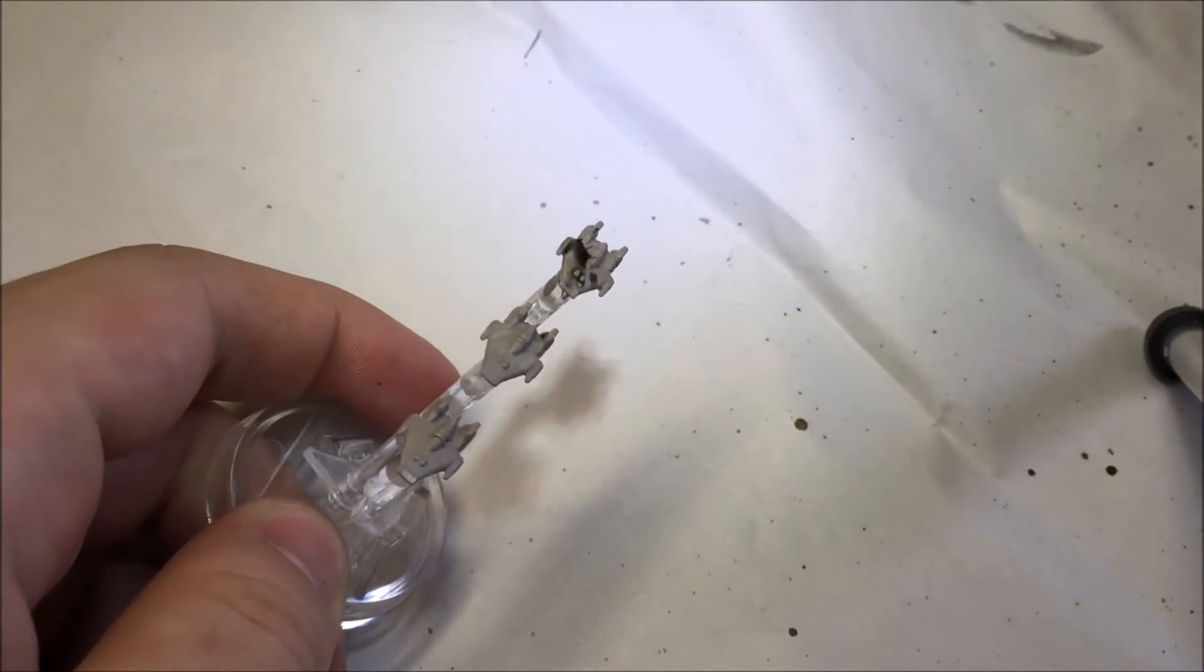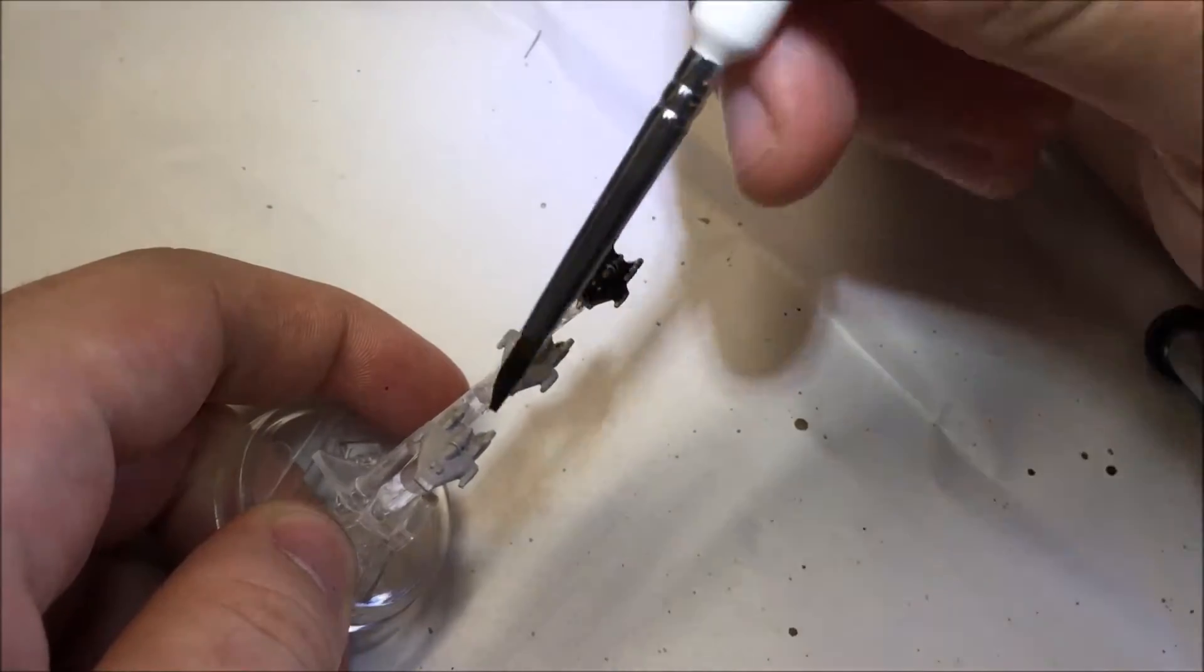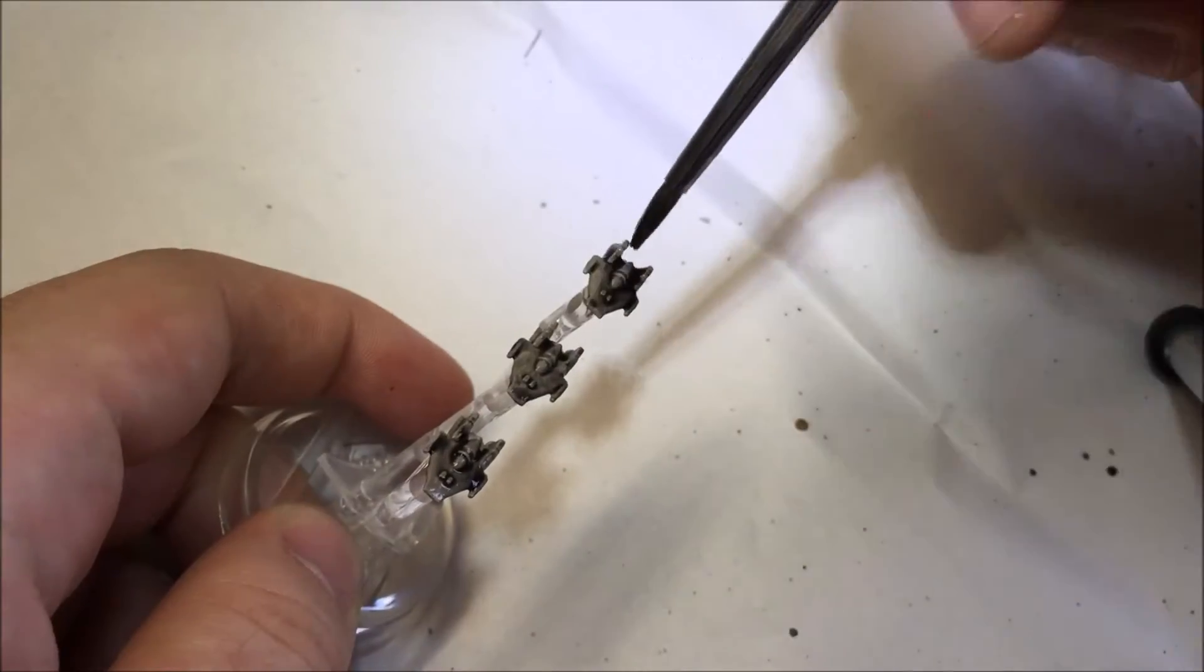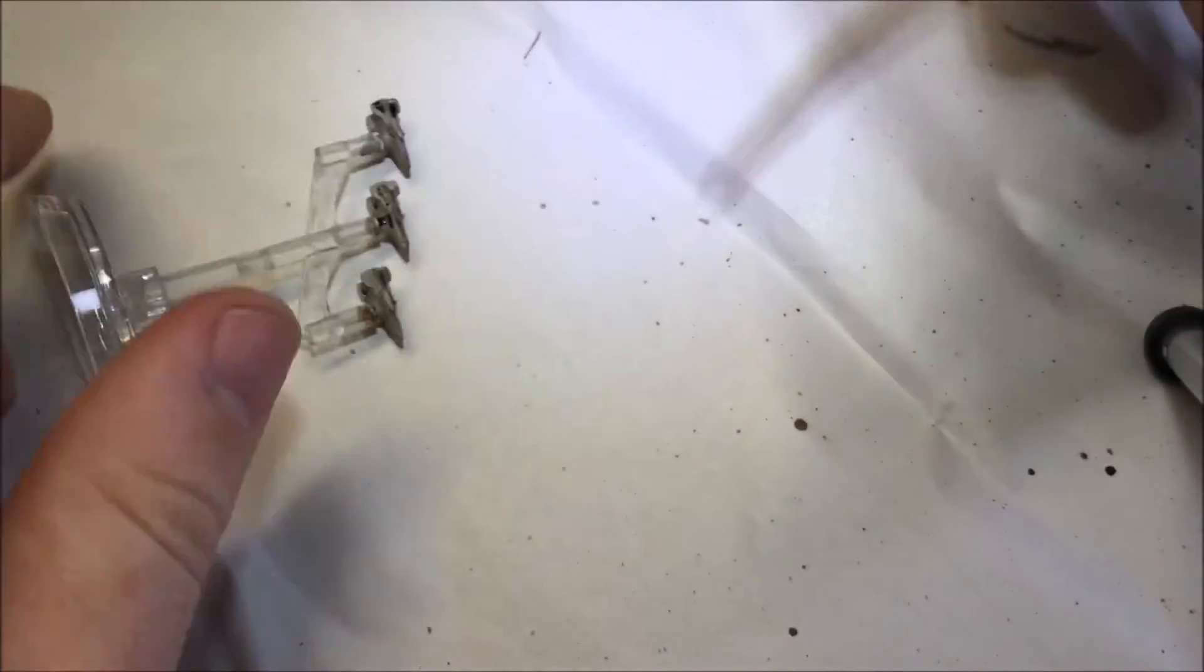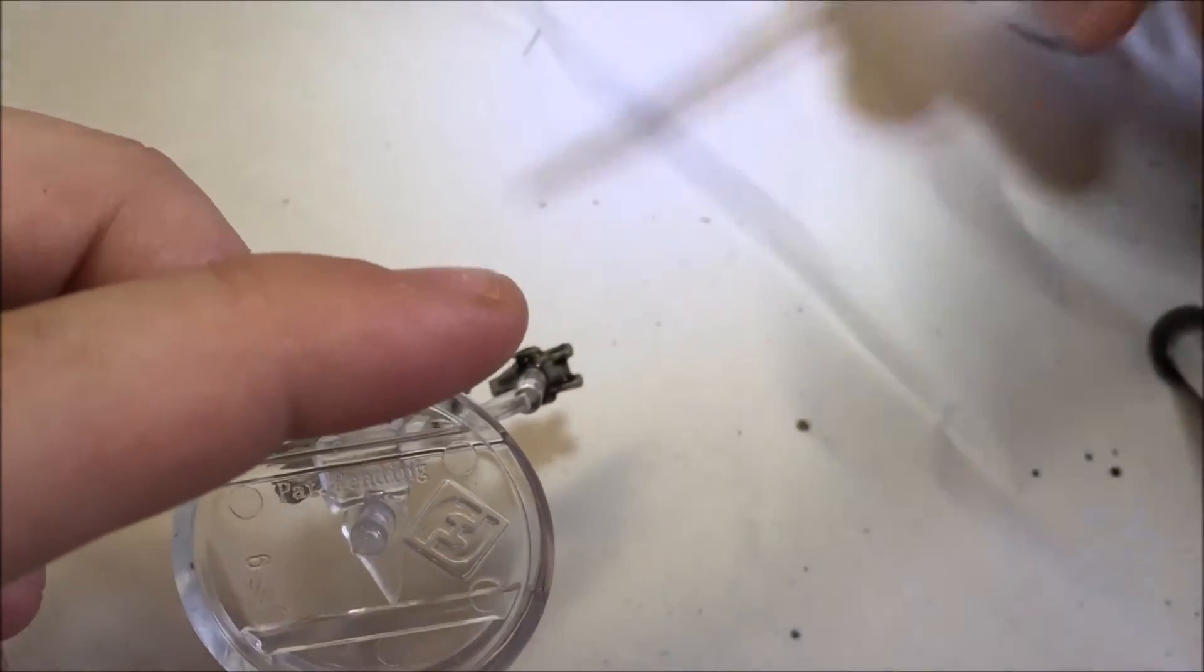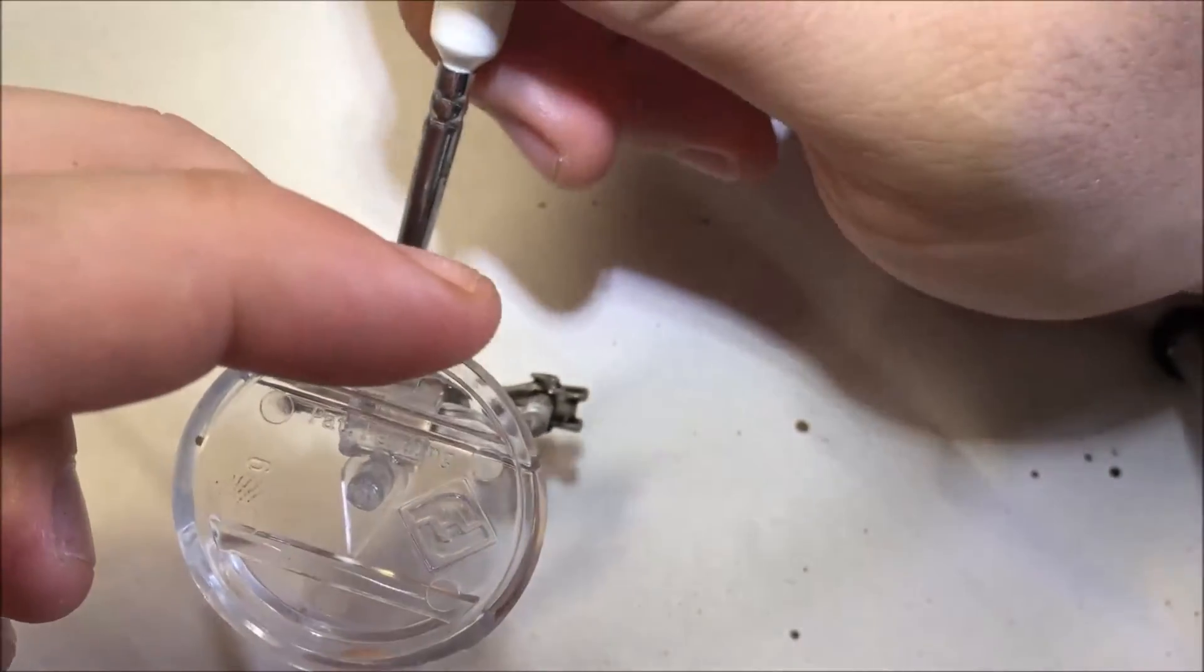The second step is to wash the fighters with a black wash. I've used Games Workshop's Nuln Oil. Make sure you cover the whole fighter during this stage. Don't put the wash on too heavy. If you do put it on too heavy just wash out your brush and remove excess wash from the model.